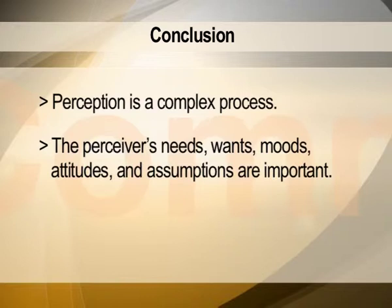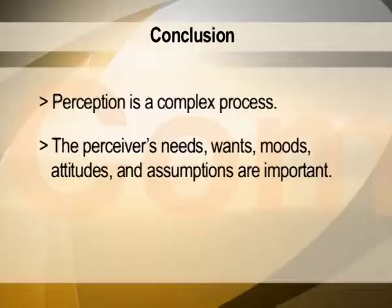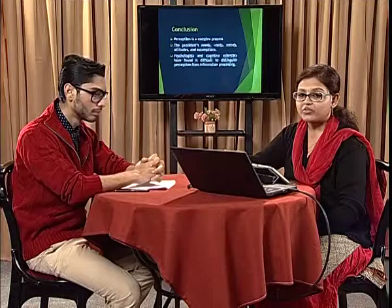Keeping in mind that these processes are not discreet, we will come to the conclusion — perception is a very complex kind of process. The perceiver's needs, wants, moods, attitudes, and assumptions are something which are very important. In order to study or understand perception, we need to not only stick ourselves to selective processes, but we need to also deal with other theories associated with the psychological understanding of how an individual is going to interpret a particular message. Different kinds of psychologists and cognitive scientists have actually found it difficult to distinguish perception from information processing. The way information is being processed in the brain is very complex in nature, and it is not easy to make watertight compartments between each and every aspect of that, because human behavior and human attitude is something which needs to be studied more in detail, and this is being done by theorists even now.